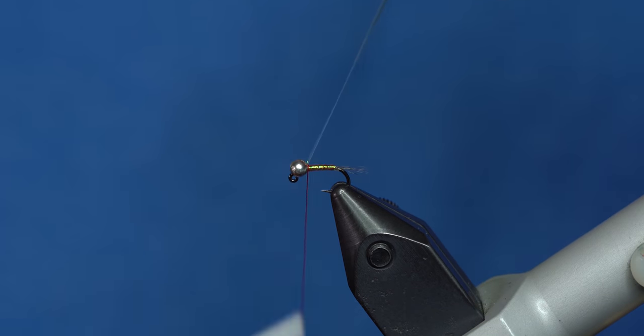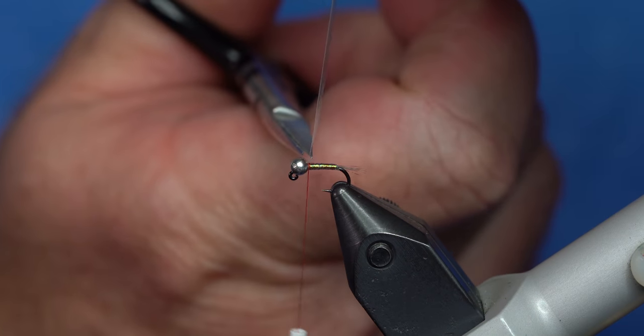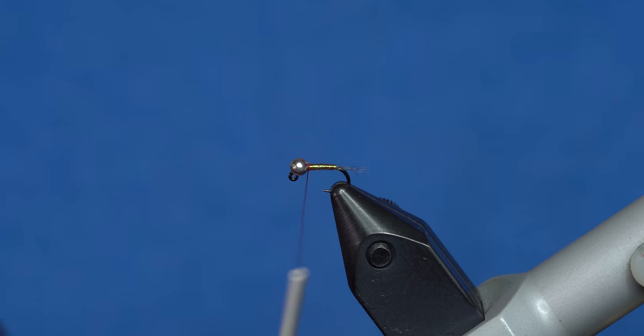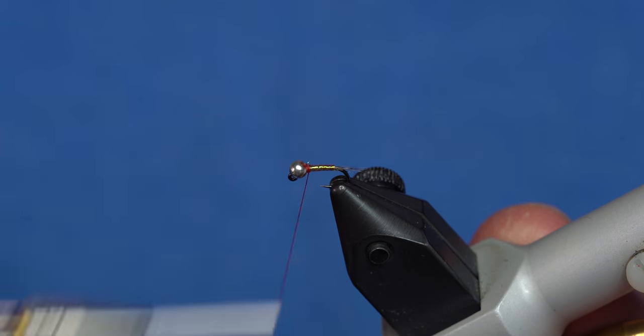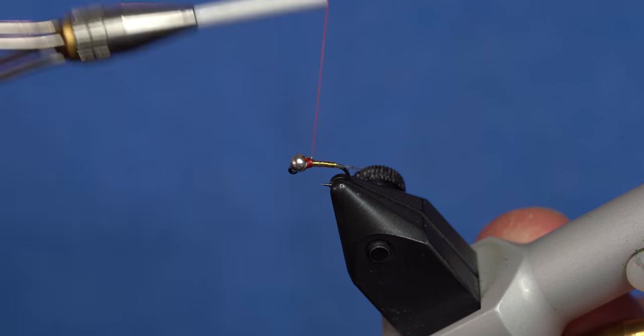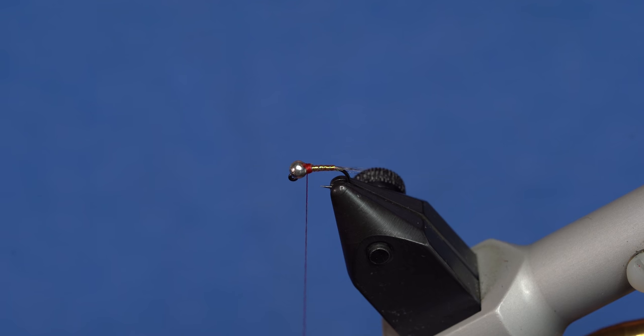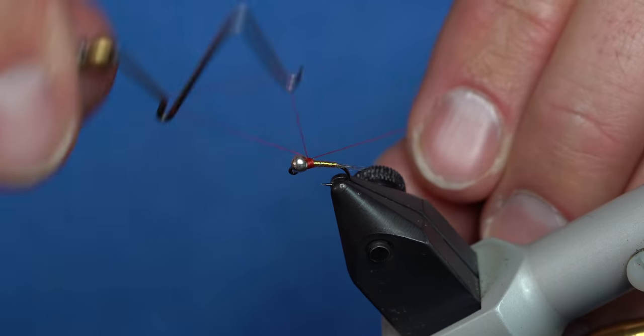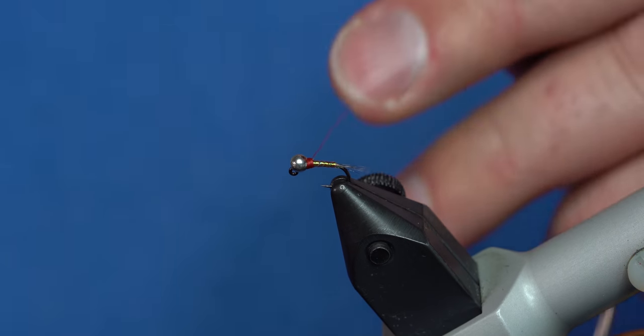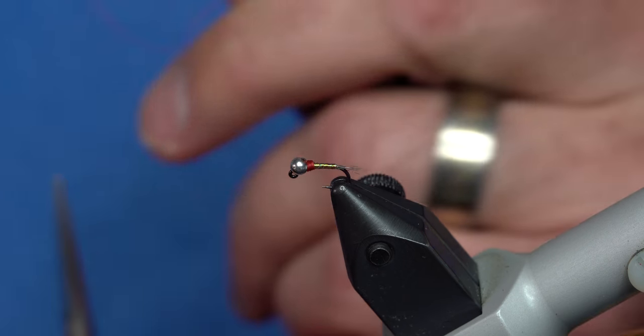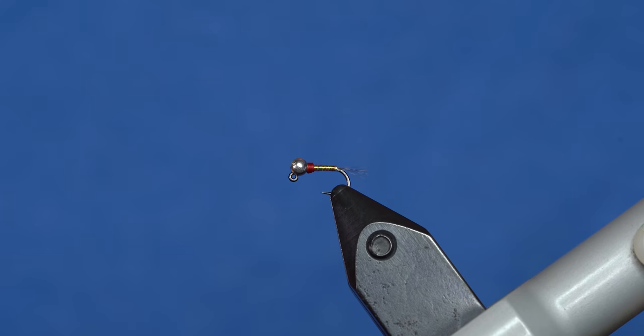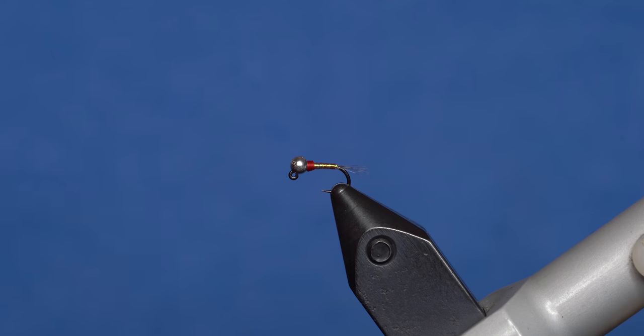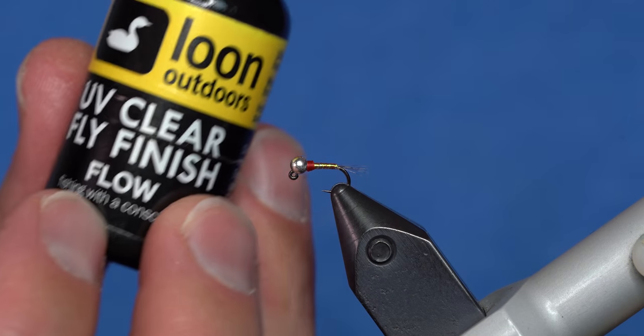We're going to capture the tinsel, trim it as close as possible, and then we're just going to use the red thread to make a little hot spot right behind the bead, like that. I'm going to whip finish. Now you basically have a rainbow warrior without the dubbing, but what we're going to do is add a little bit of UV resin.